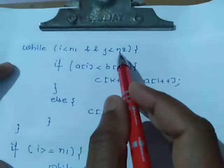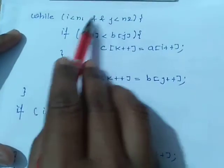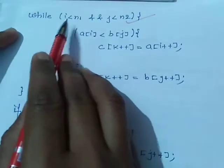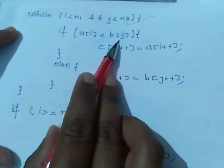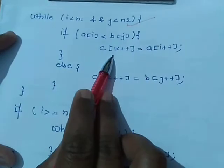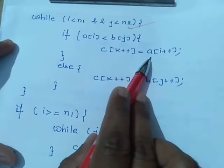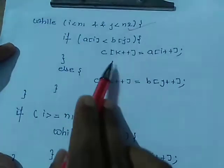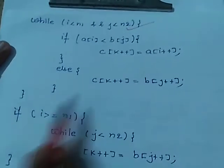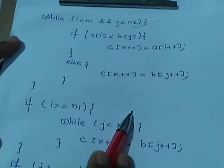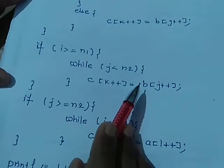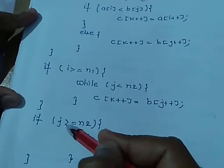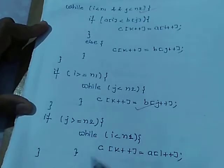This loop compares elements of the two arrays until one array is exhausted. While i<n1 and j<n2, if a[i] is less than b[j], we put a's element into the third array and increment the pointer so the next element goes in the next location. If this condition is false we place b's element. Once one array is exhausted, we check i and j and assign the remaining elements of the other array into the third array.